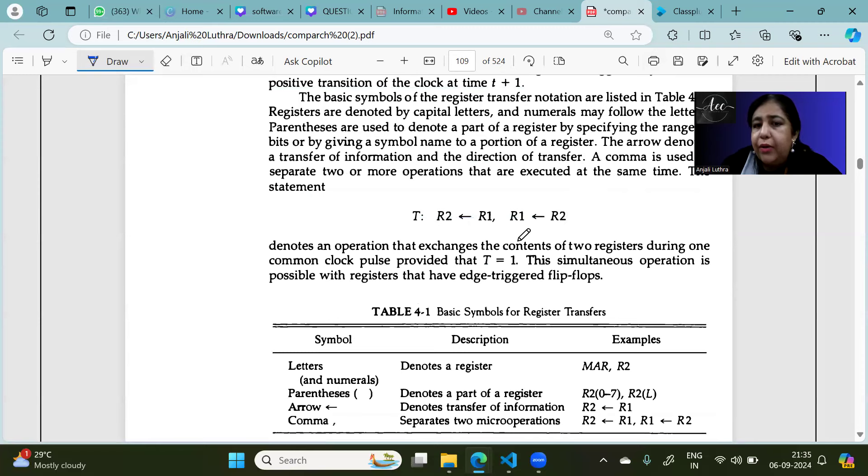Now, if there are two jobs, then you can write the format. This is swapping of two registers. So we have written T: R1 arrow R2, R2 arrow R1. So it will be simultaneous. This will swap the two registers if T is 1.